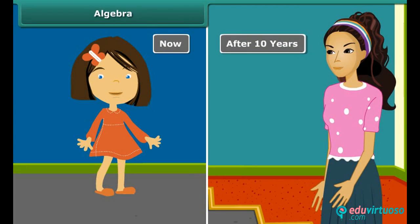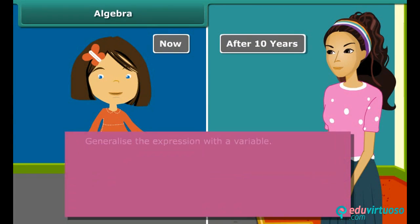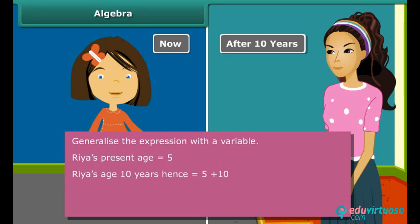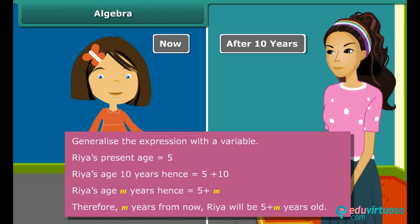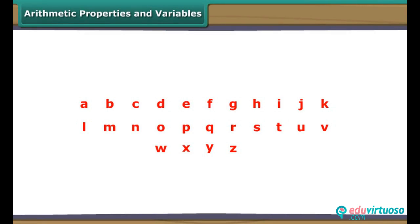Ria is 5 years old now. Her age after 10 years is 5 plus 10. Generalizing with a variable: Ria's age m years hence is 5 plus m. Therefore, m years from now, Ria will be 5 plus m years old.